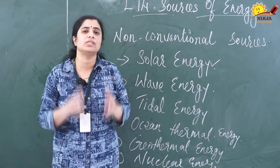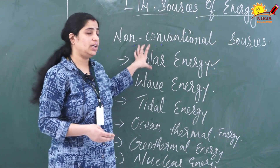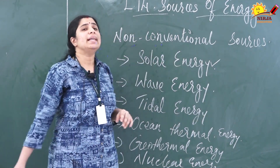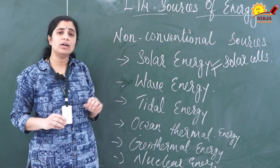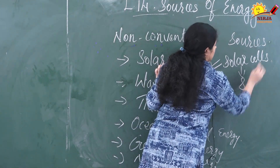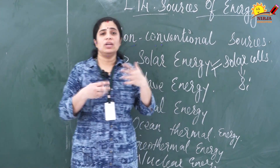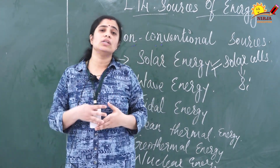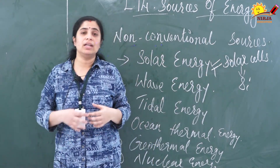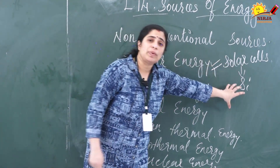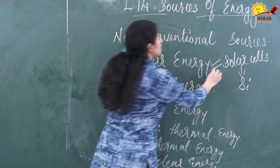First we will go to solar energy. In solar energy, we are making use of the energy from the sun — the solar energy is converted into electrical energy. For this we are using solar cells. Solar cells are made up of silicon, and sometimes silver is also used. Silicon is mostly used. One of the disadvantages of solar cells is that silicon is very expensive, making the solar panel very costly. When two or more solar cells are connected in series, that is known as a solar panel.